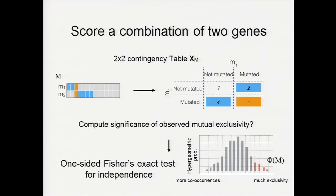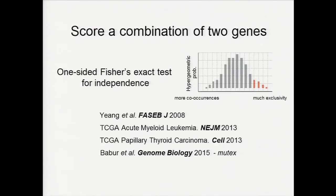Probably everyone knows we can do this using a one-sided Fisher's Exact test for independence, because there is just one degree of freedom for a two-by-two contingency table, which enables us to find non-independence either toward more co-occurrence or mutual exclusivity. You can define a score for a gene set by summing the tail probability toward the direction of more exclusivity. This Fisher's Exact test for independence for a pair of genes has already been widely used in several cancer studies.